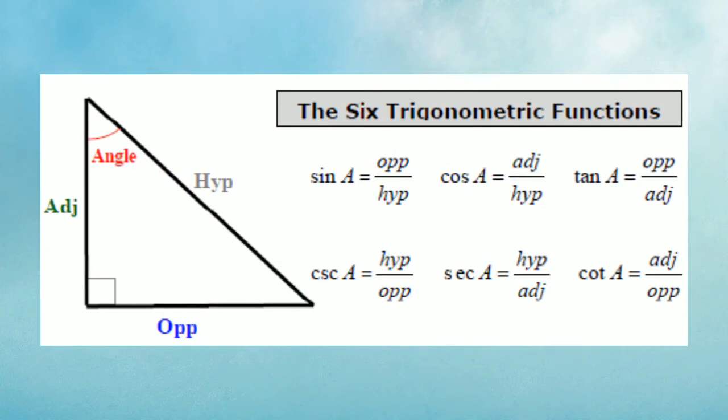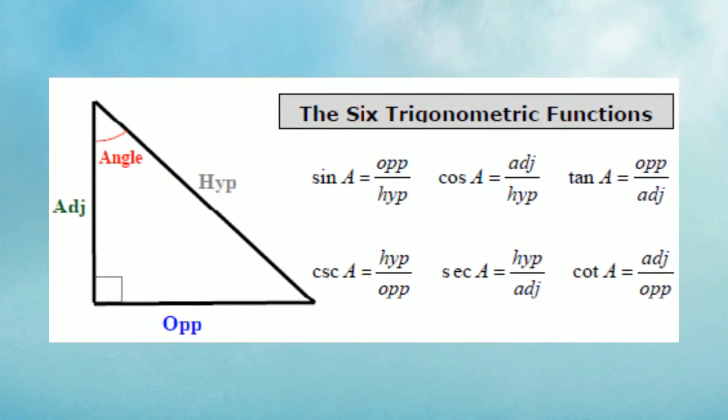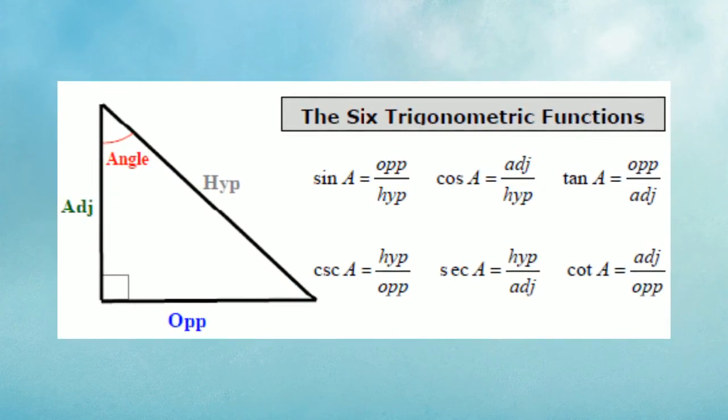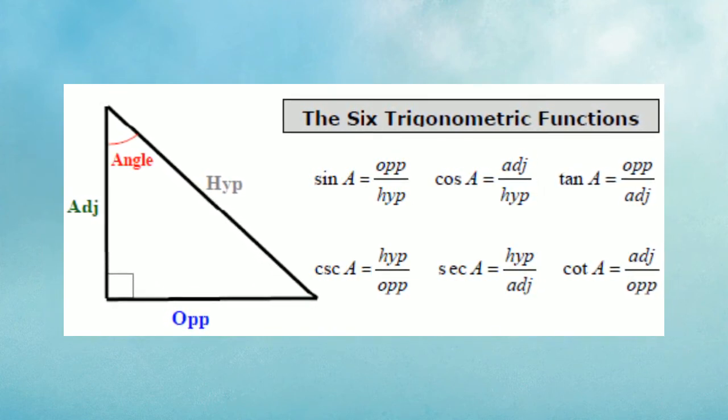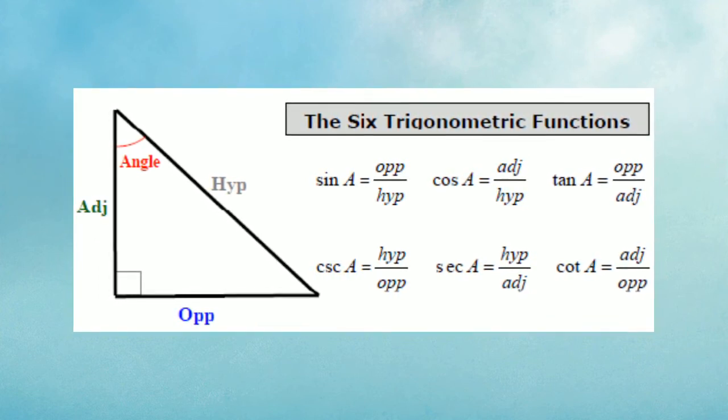Reciprocal functions also only work on right triangles. This says cosecant, opposite or the reciprocal of sine, is hypotenuse over opposite. Secant is the opposite or the reciprocal of cosine, meaning it's hypotenuse over adjacent.